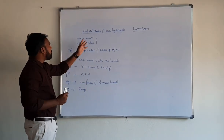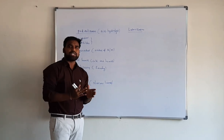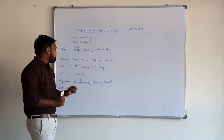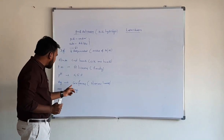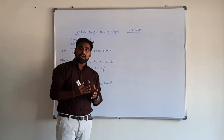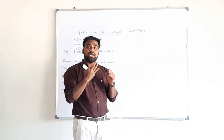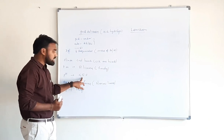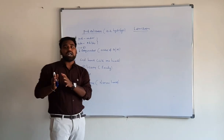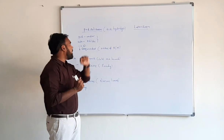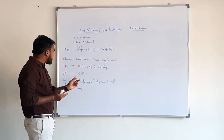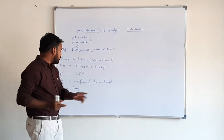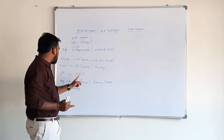Due to organic acids formed in the podzolization process, there is intensive leaching of basic cations — calcium, magnesium, sodium, and potassium. Also, with sandy parent material, there is intensive leaching of these basic salts. The vegetation is coniferous, which is acid-producing. Due to these two reasons — intensive leaching of basic salts and acid-producing vegetation — the pH of podzolization is less than 5.